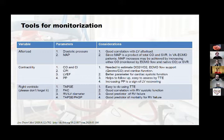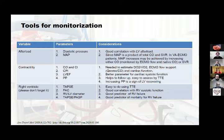As we increase ECMO flow, we will also increase vascular resistance. Contractility is really important — we need to assess the difference between the cardiac output of the heart and the flow we are giving externally with VA ECMO, in order to know how much support the patient needs. We can assess this by the difference between ECMO flow and cardiac output, and know what percentage of support the patient requires.